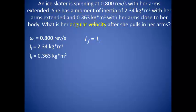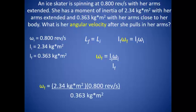Since we are looking for the final angular velocity, we use the moment of inertia and angular velocity from our conservation of angular momentum equation and rearrange to solve for the final angular velocity. We know all of the terms on the right, so we can just plug those in. What we find is that just by bringing her arms in close to her body, the skater can go from less than 1 revolution per second to just over 5 revolutions per second.